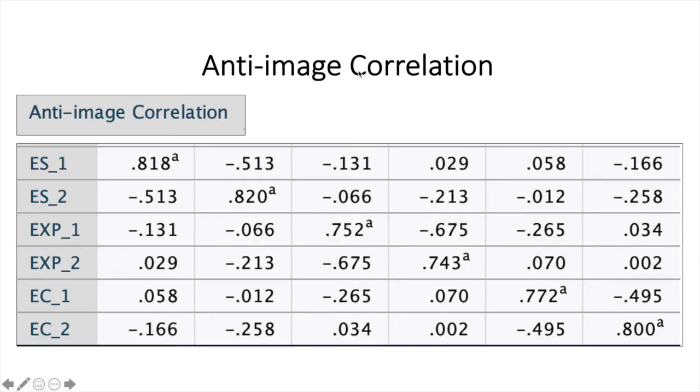Next, we look into the anti-image correlation. We look into all the values at the diagonal. So you can see from ES1 right up to the last item here which is EC2, all the values are greater than 0.5. Therefore, we don't have to delete any items.